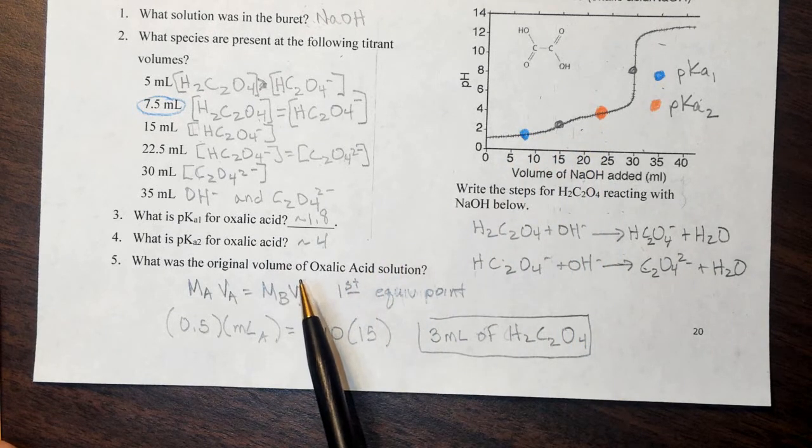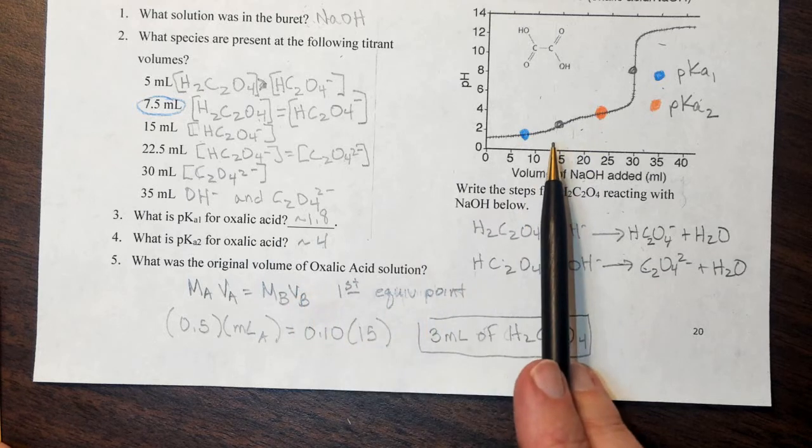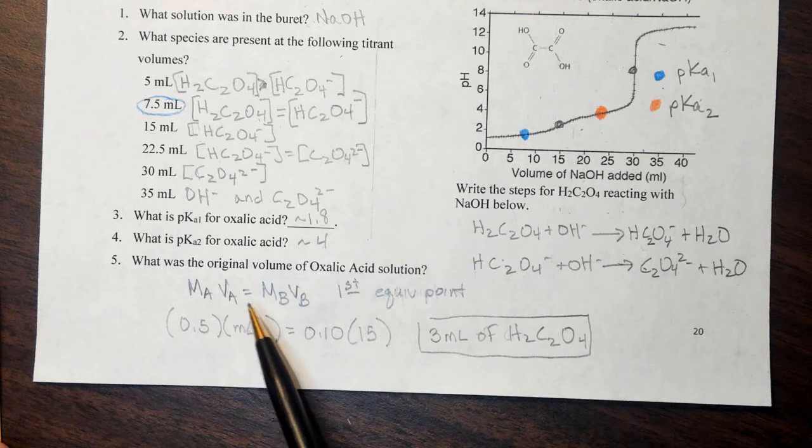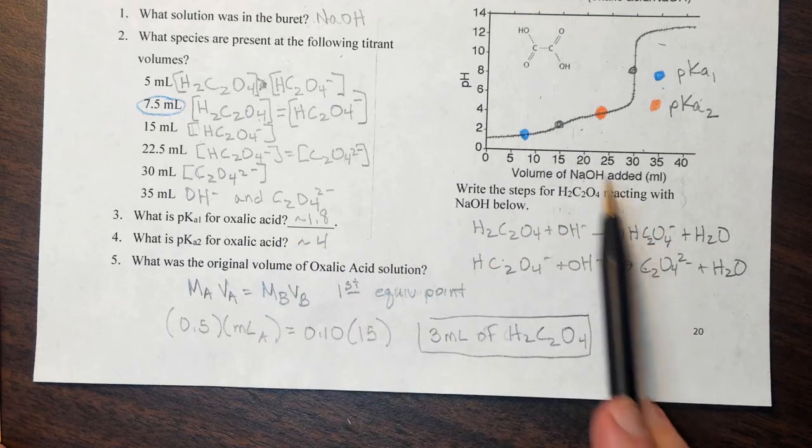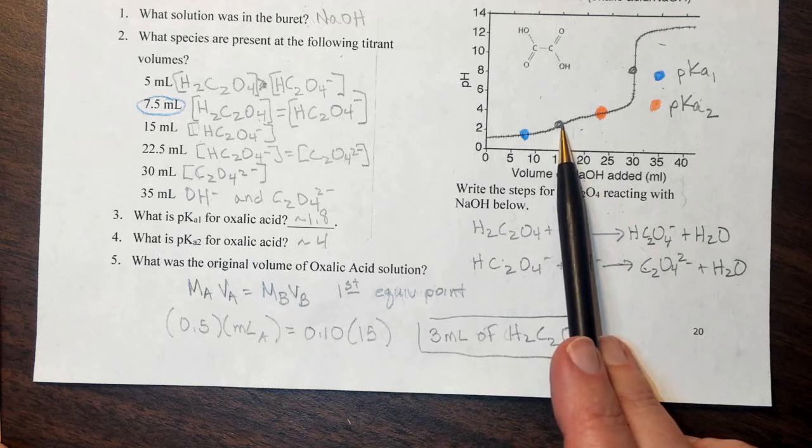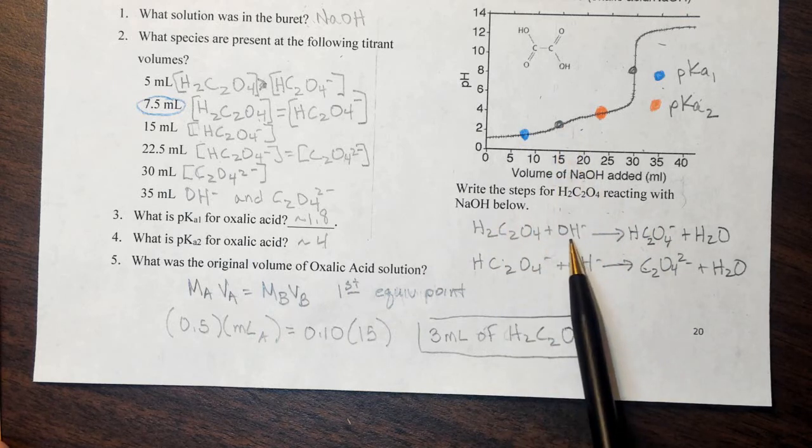The last question: what was the original volume of the oxalic acid? So when you have something like this, you can only use this MAVA equals MBVB if you're doing a one-to-one reaction. So I only want to go to the first equivalence point because this represents a one-to-one reaction.